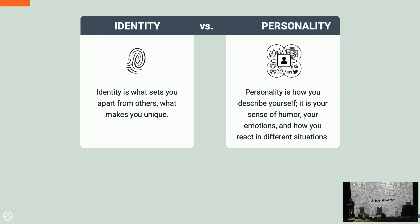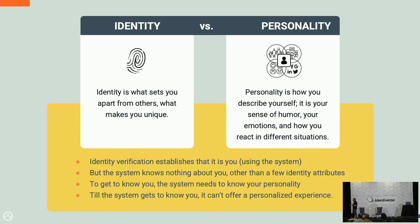So how are identity and personality connected? Identity basically tells you who you are, but it doesn't reveal your exact personality. Personality comes from your sense of humor, your emotions, and how you interact in various applications. Unfortunately, most systems know your identity because it's already stored, but they don't know your personality because the two are not interconnected. That's where we have a gap in application development, and that's where we are trying to find a solution.